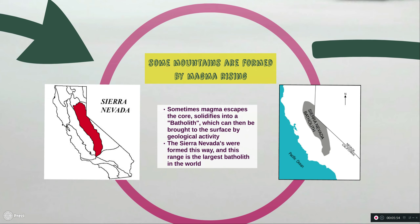The magma for the Sierra Nevada batholith formed slowly underground, which allowed it to form a lot of crystals. If you go into the Sierra Nevadas you'll notice that most of the rocks there are made of granite, which is essentially a collection of crystals that grew together.